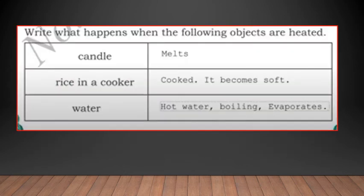Write what happens when the following objects are heated. This activity is also given in your textbook on page number 145. What happens to the candle when you heat it? It melts. Rice in a cooker - when you heat the rice in the cooker what happens? It gets cooked or it becomes soft. Then water - hot water, it heats the water, starts boiling and starts evaporation. In the next class we will learn about the change in the state of matter.